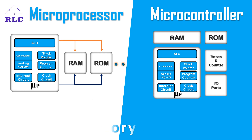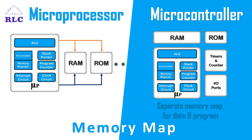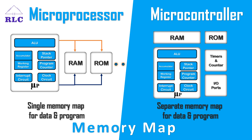Next comes memory mapping. A microprocessor has a single memory map for both data and program, whereas a microcontroller has separate memory maps for data and program.